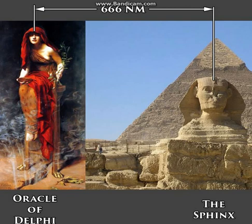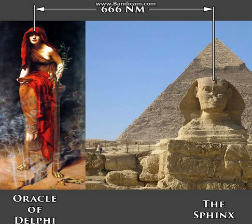Hello, here is one example of how number 6 is coded within the different parts of the world, between sacred sites and important places and important buildings of the world. We have number 6 here present in the distance between the Sphinx in Egypt and the Oracle of Delphi in Greece.